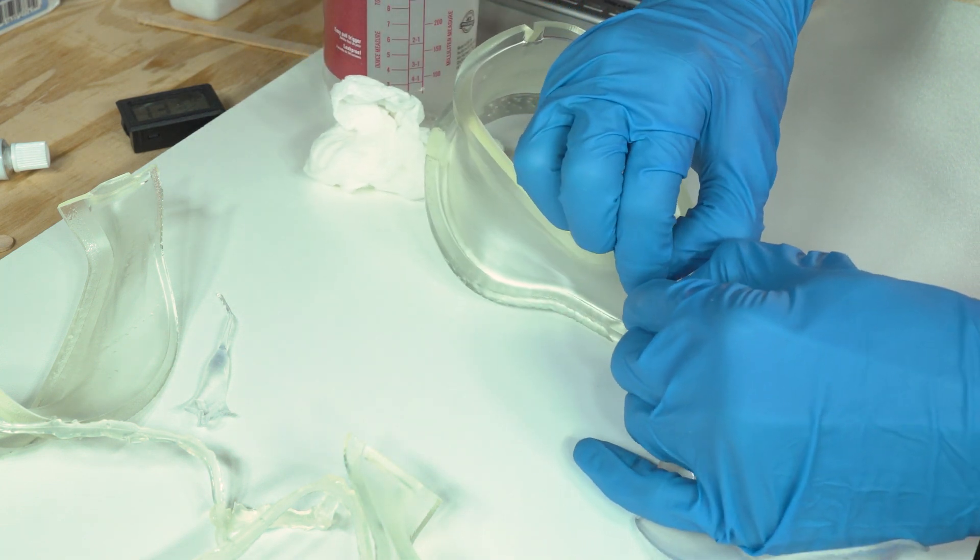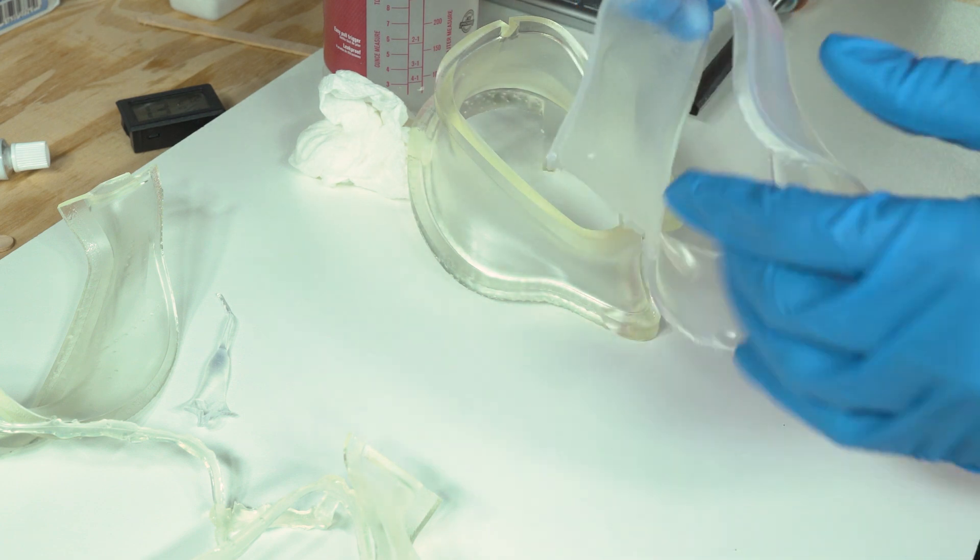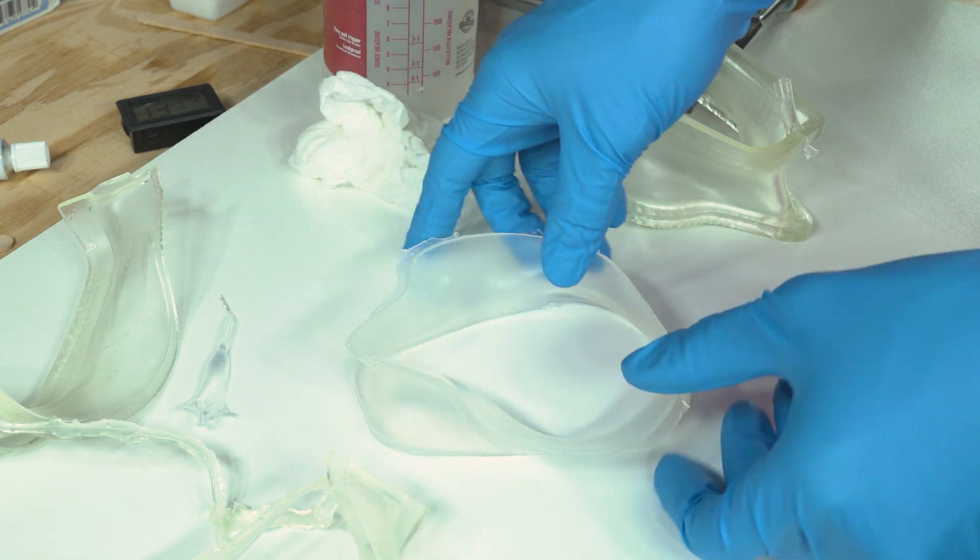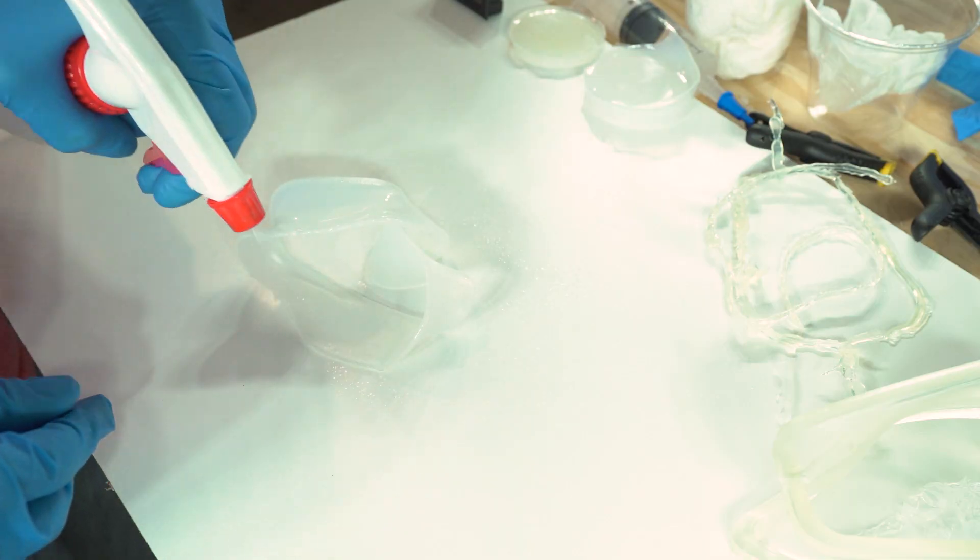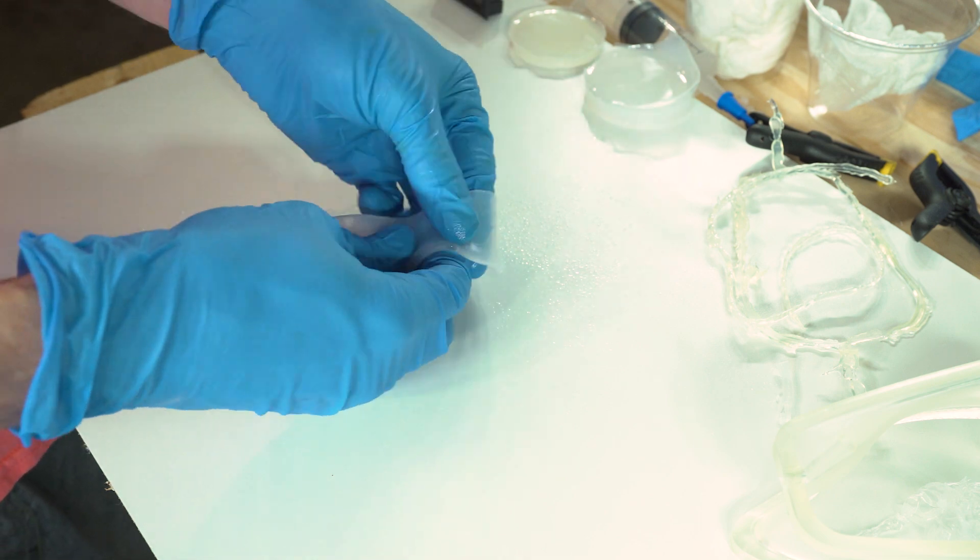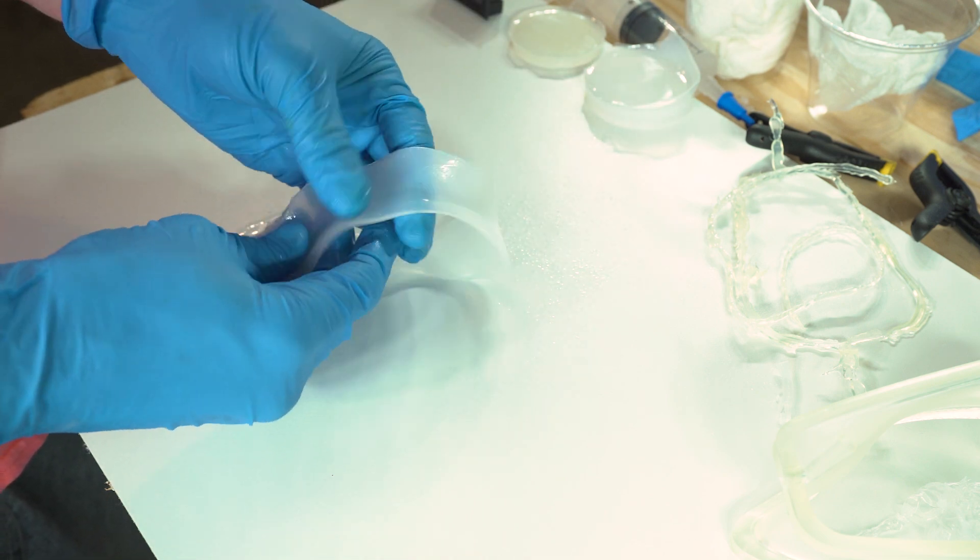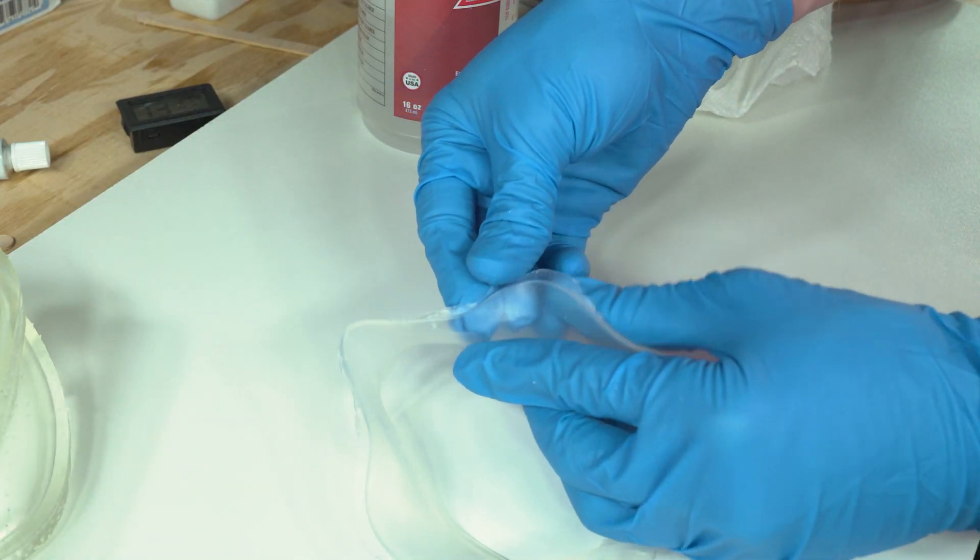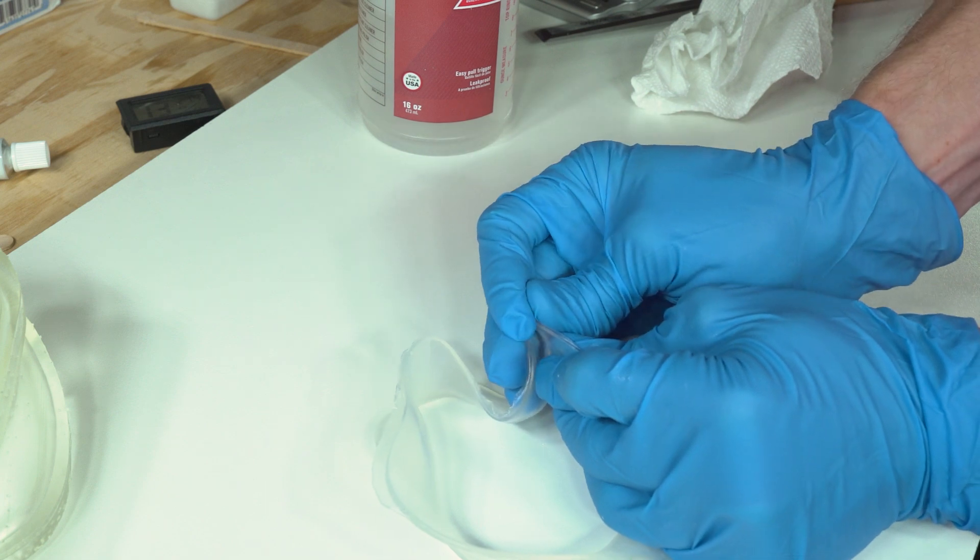Both the EcoFlex 0030 and the SortaClear 18 formed great looking parts with minimal flashing. The EcoFlex was disgustingly sticky thanks to the mold release and needed thorough cleaning. Any flashing on the parts was easily torn away or trimmed off with scissors.